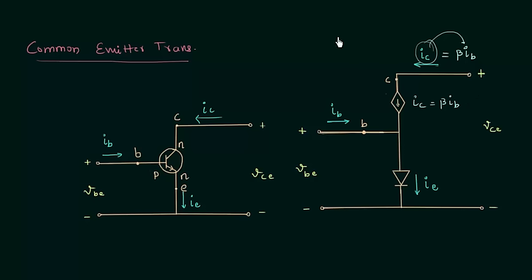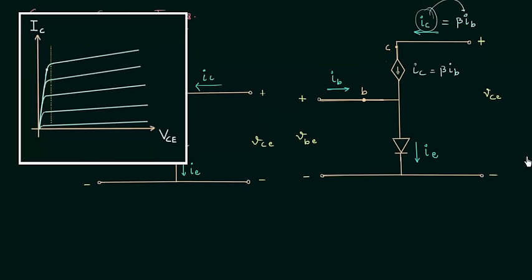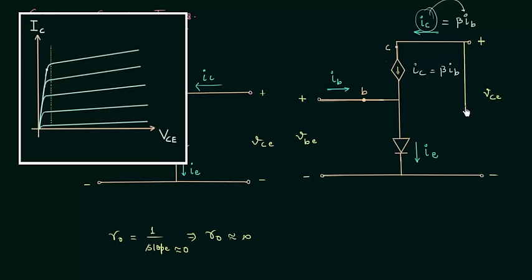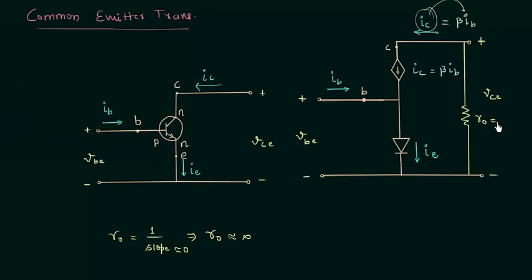The collector current equals β·IB plus (β+1) times the reverse saturation current. If you look at the output characteristics of the common emitter transistor, the output resistance is very large because resistance equals 1 divided by the slope of the curve, and the slope is nearly zero. This means the output resistance is nearly infinite, so resistance R_O equals infinity and we can neglect it — no current flows through R_O.